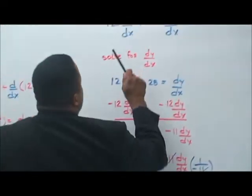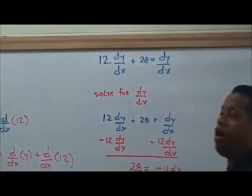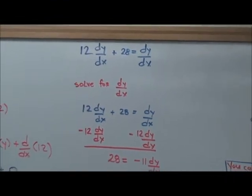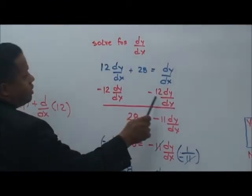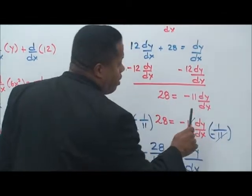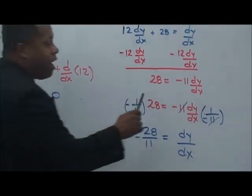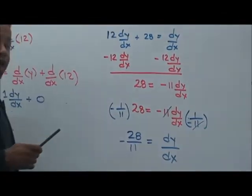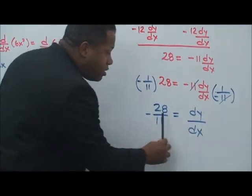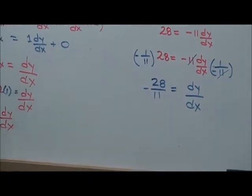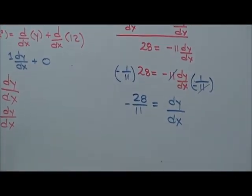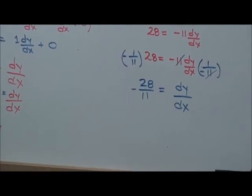Now we can comfortably solve for dy over dx. We're going to take negative 12 dy/dx to both sides. When we do that, we're left with 28 equals negative 11 dy over dx. So now we can multiply both sides by 1 over negative 11, and we have dy over dx is equal to negative 28 over 11. That is our solution for that particular problem.